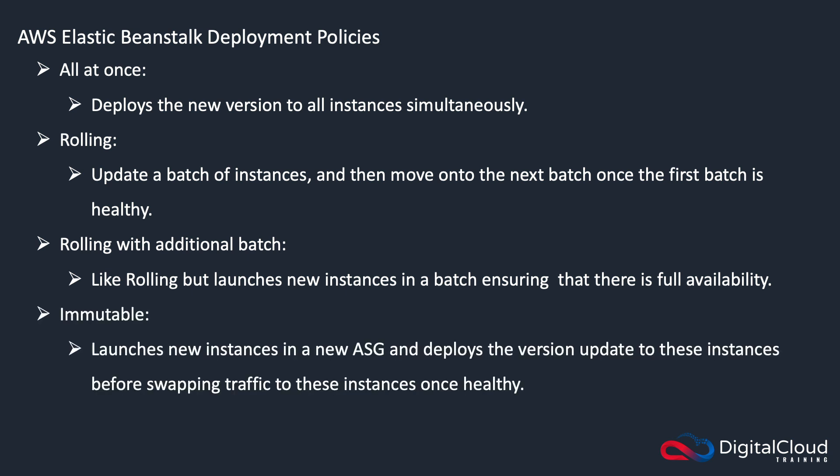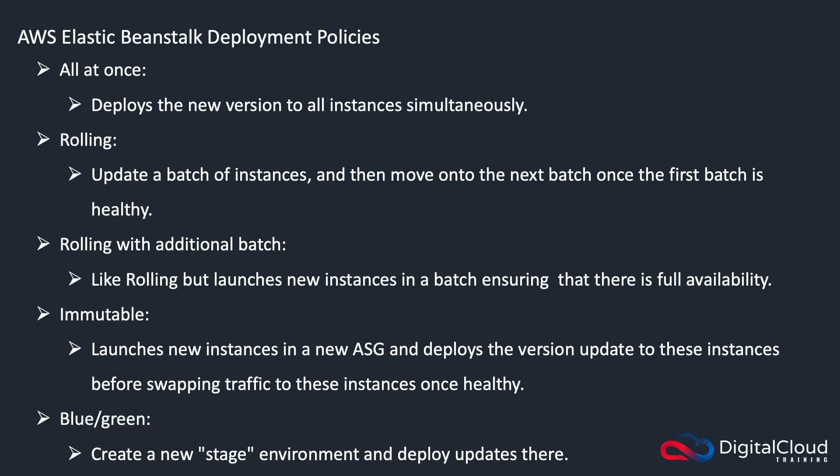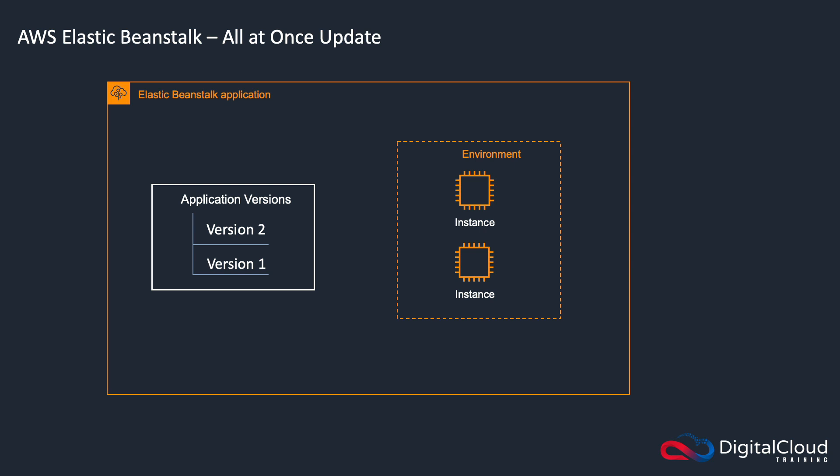We then have immutable, where a whole new auto scaling group is deployed with the new version of the code, and then your existing auto scaling group instances are updated, and then the new auto scaling group is removed. We then have blue/green, which is not exactly an Elastic Beanstalk feature — but we create a new staging environment, deploy the updates onto that environment, and then direct a certain amount of traffic there. So let's have a look at these in more detail.